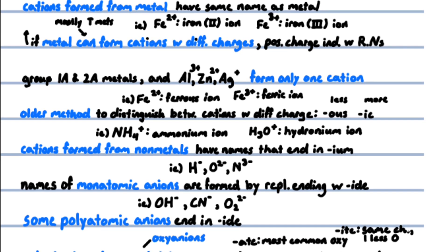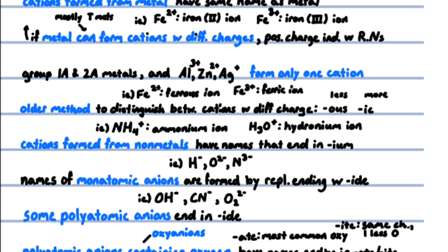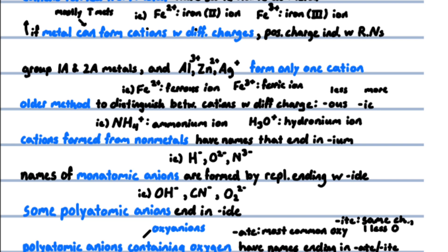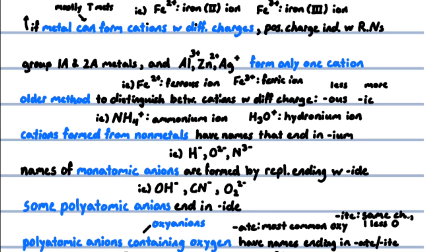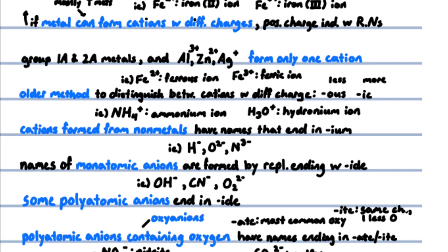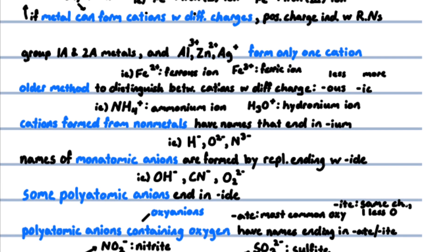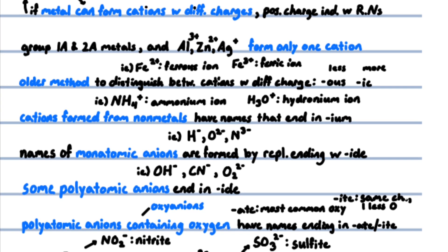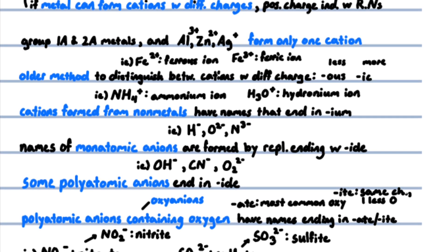The names of monatomic anions are formed by replacing the ending of the name of the element with -ide: hydride, oxide, nitride. A few polyatomic anions also have names ending in -ide: hydroxide, cyanide, peroxide. Polyatomic anions containing oxygen are called oxyanions. They have names ending in either -ate or -ite. The -ate is used for the most common or representative oxyanion, and the -ite is used for an oxyanion that has the same charge but one less oxygen atom.